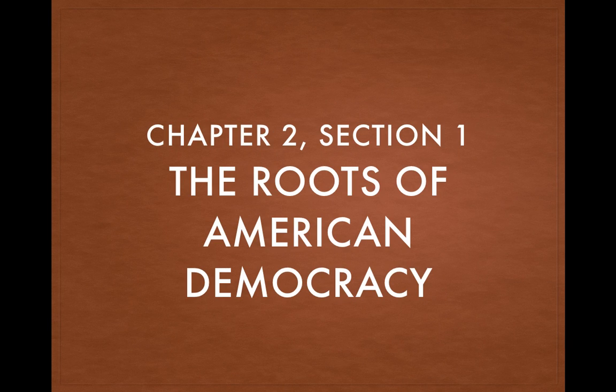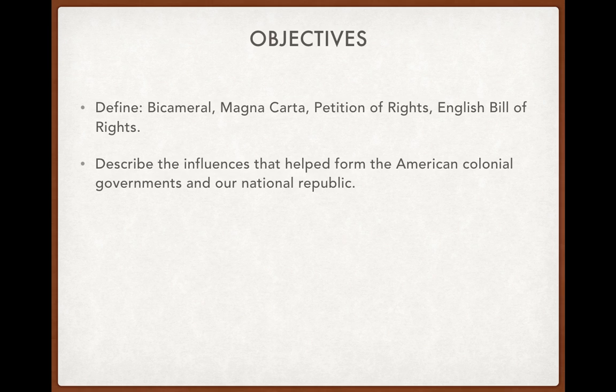Today we're on chapter 2, section 1: the roots of American democracy. Two objectives for today — vocabulary words: bicameral, Magna Carta, Petition of Rights, and English Bill of Rights. The other objective is to be able to describe the influences that helped form the American colonial governments and our national republic.